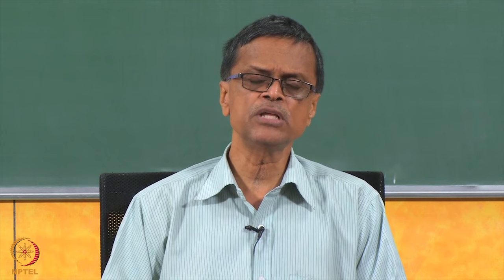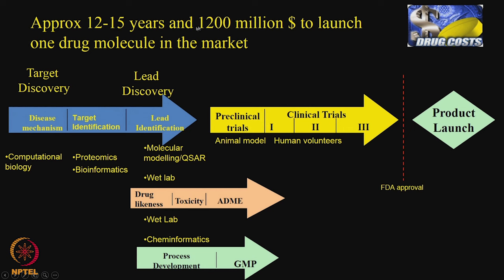Hello everyone, welcome to the course on computer aided drug design. Today we are going to talk about target identification and lead identification. Where do target and lead identification come in our overall process? Yesterday I showed you a nice interesting slide where we use a lot of in silico methods — the target identification is the target protein or enzyme which you are looking at, trying to know the active site and so on.